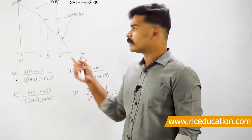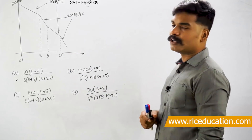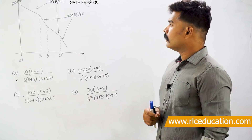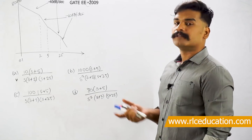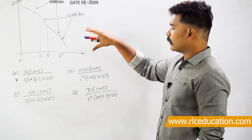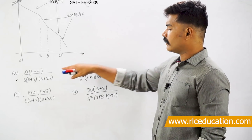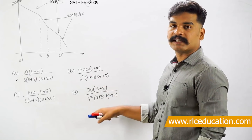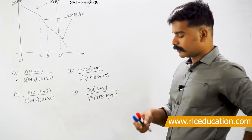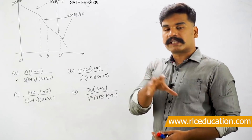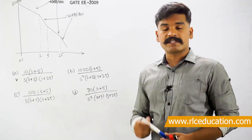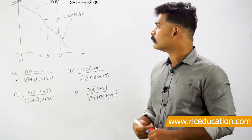I have taken a question here from GATE 2009 Electrical Engineering paper. In this question, a Bode plot is given and you are asked to find out the transfer function from some given options. Bode plot, as I was telling, comes under frequency response analysis of control systems.